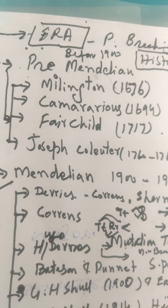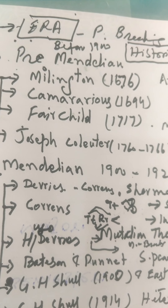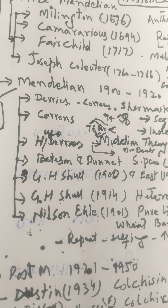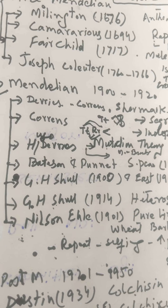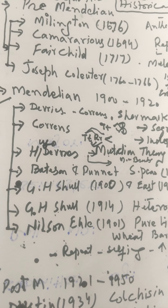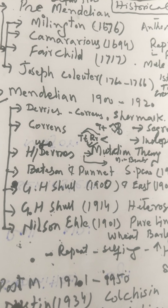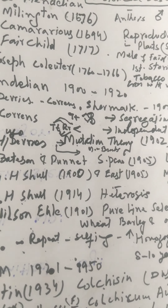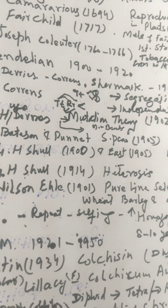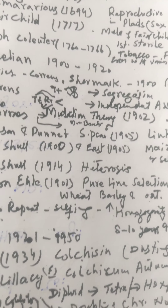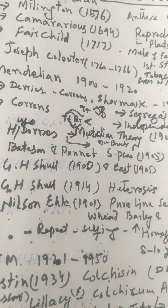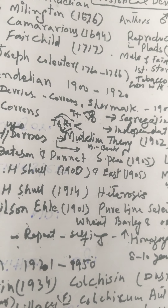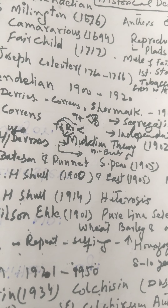The Pre-Mendelian Era is before the 1900s. In the Mendelian Era, three scientists rediscovered the work of Mendel. They were DeVries, Correns, and Schermack. Mendel's work was based on two main laws of genetics: the law of segregation and the law of independent assortment.